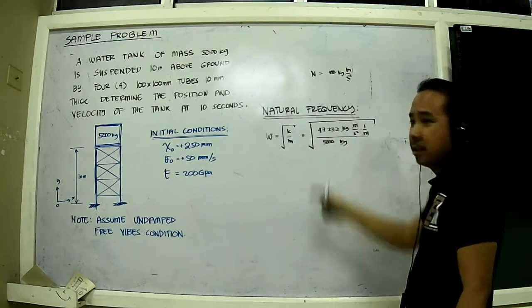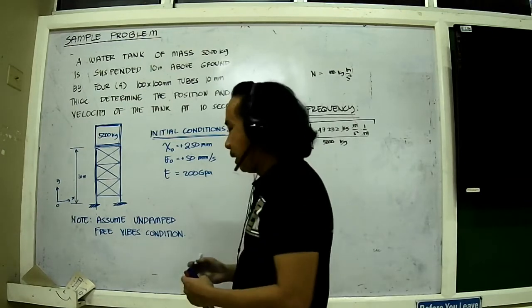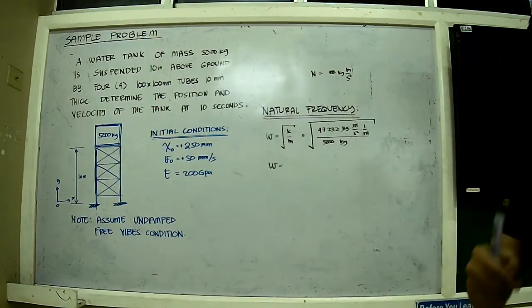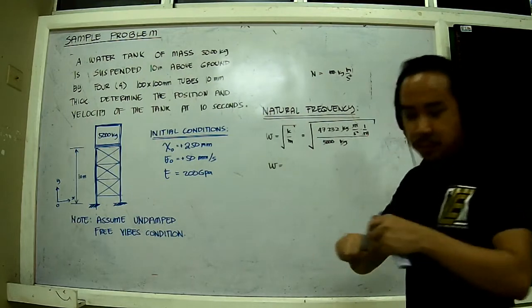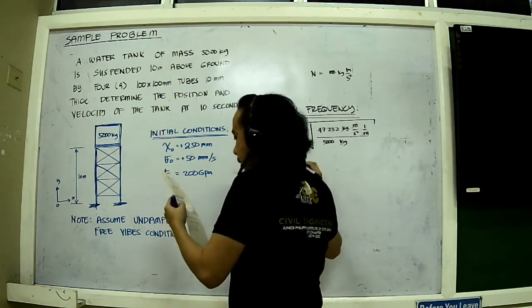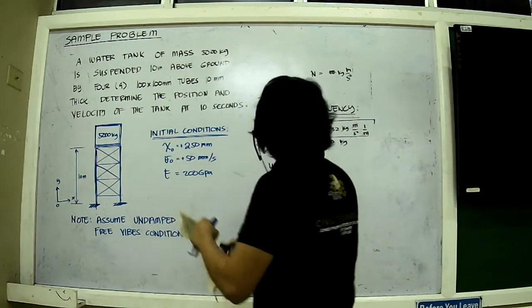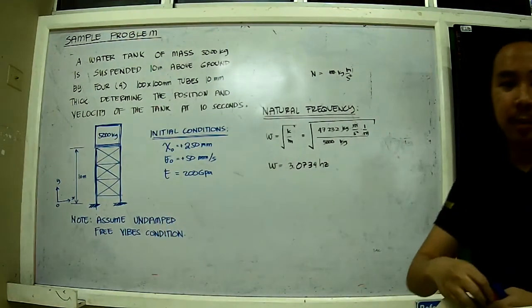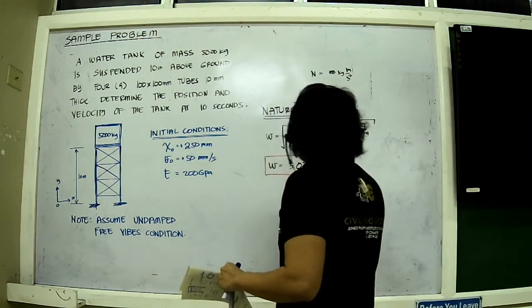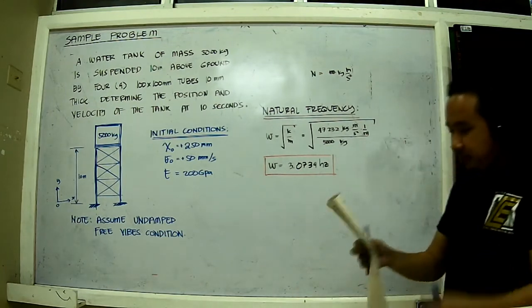Therefore omega, the natural frequency, should be equal to 3.0734 hertz. This is our natural frequency for the structure. I'll just close this in a box.